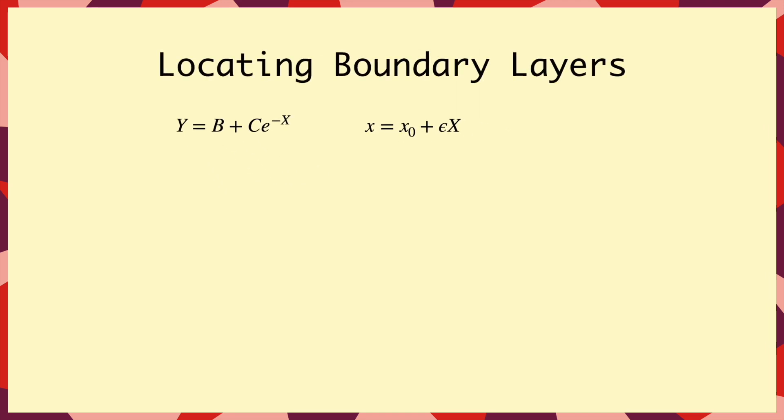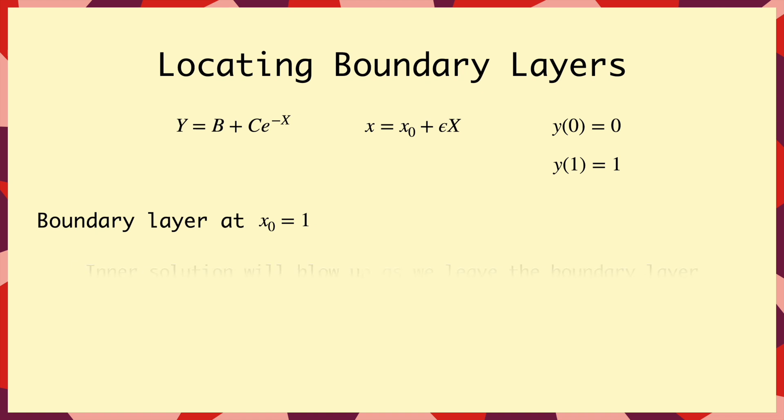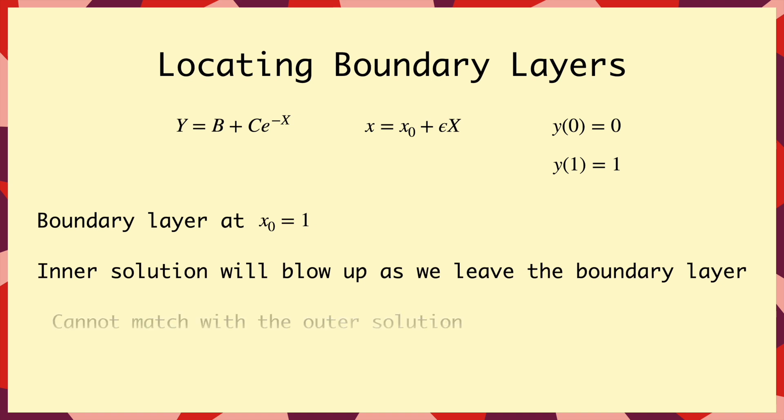So let's say we think there's a boundary layer at x₀ = 1. Well if there is, then as we move into the domain, big X is negative. So that exponential term, e^(-X), will get really big, and there's no way we can match this with the outer solution or meet the boundary condition at x = 0. So this won't work.